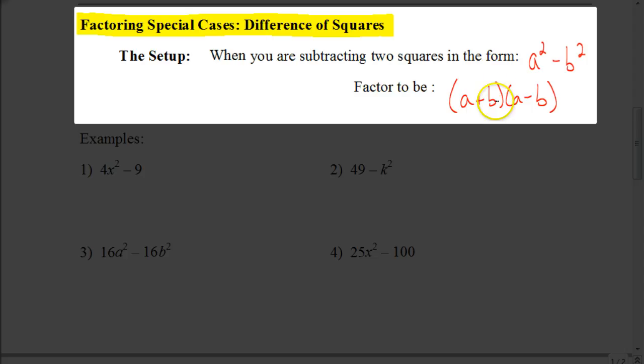In other words, if you were to take (a + b)(a - b) and FOIL that, you'd end up getting a² - b² as your answer. So again, a² - b² factors down to be (a + b)(a - b).